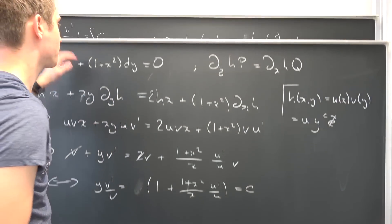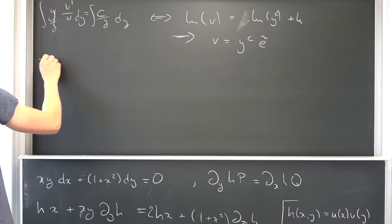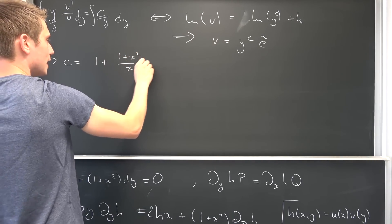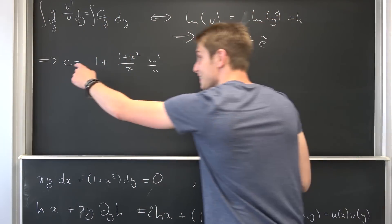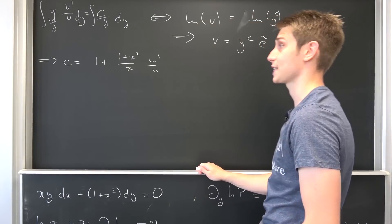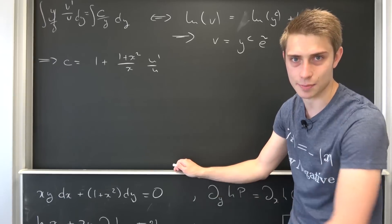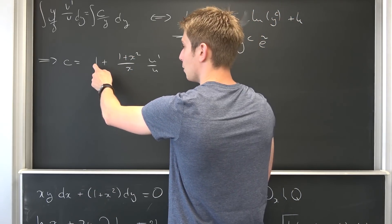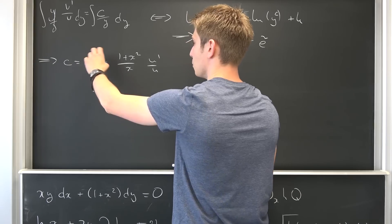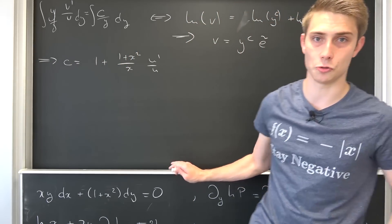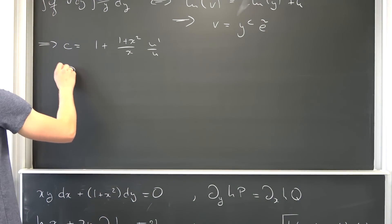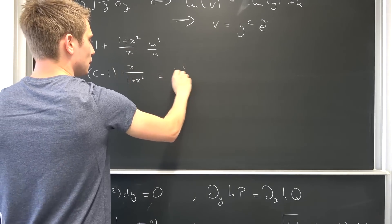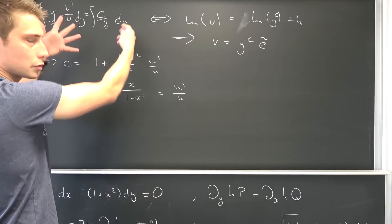Our second expression is: c equals 1 plus 1 plus x squared over x times u prime over u. One important thing — this c is the same one as before; don't call it kappa, it won't work out. So subtracting 1 on both sides and multiplying by the reciprocal gives us: c minus 1 times x over 1 plus x squared equals u prime over u. We integrate both sides with respect to x.